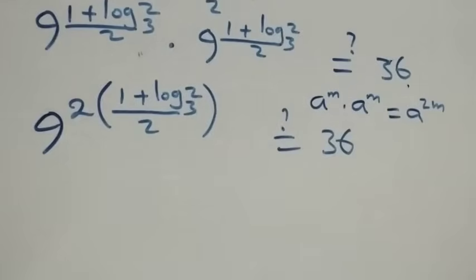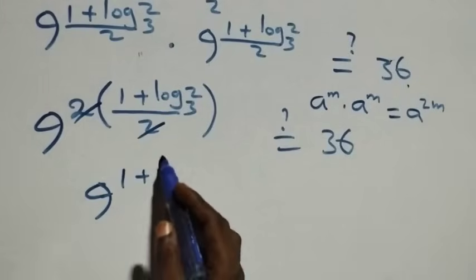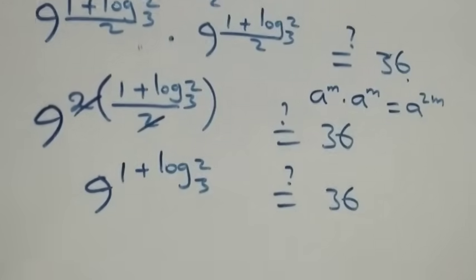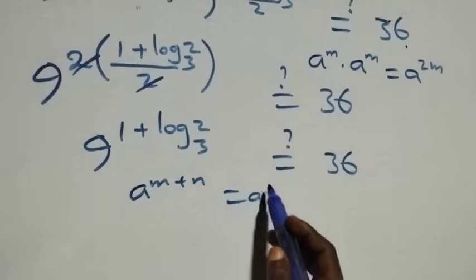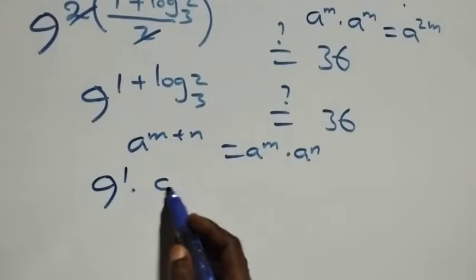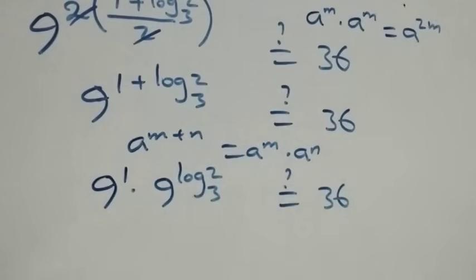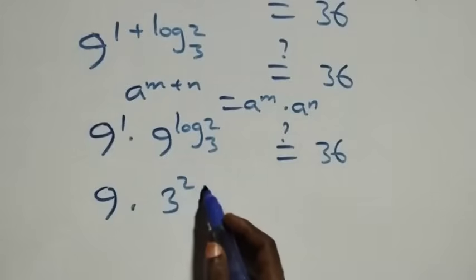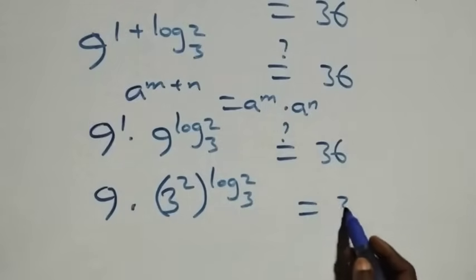The power multiplies: the 2 and the denominator 2 cancel each other, leaving 9 raised to the power (1 plus log₃2) equals 36. We then apply the law of indices: a raised to the power m plus n equals a^m times a^n. So this becomes 9 raised to power 1 times 9 raised to power log₃2, which equals 36. We can express 9 as 3 squared, so we have 9 times 3 squared raised to power log₃2, which equals 36.